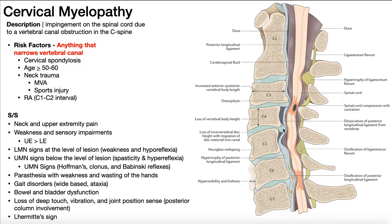Right here we see a posteriorly protruding intervertebral disc between C4 and C5, and that of course is also having that compression on the spinal cord.